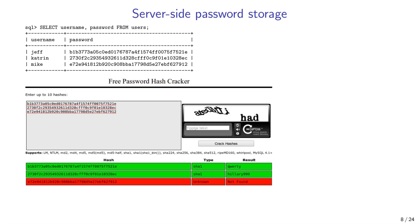These services use so-called rainbow tables or lookup tables — pre-computed hashes for the most common dictionary words and digit combinations. When you click 'crack hash', it simply looks up which inputs correspond to those hashes. One hash was not recovered because the password was 'Hillary' with three L's, which is not a dictionary word, while the other two were dictionary words.